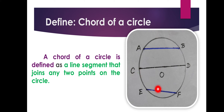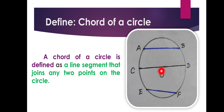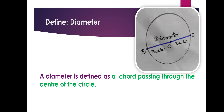We have three chords here: AB, CD, and EF. See, the chord CD is passing through center O. Definitely it is a chord. When a chord passes through the center of the circle, do we have any other particular name for this chord? Yes, we have. What is it? Diameter.